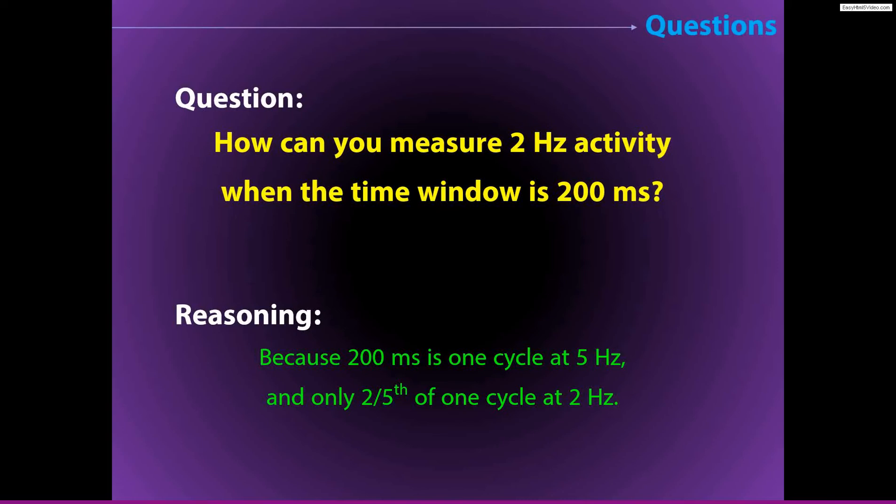And so if you're looking at 2 Hz activity, 200 ms is actually only two-fifths of one cycle. And so if I told you that here is some estimate of activity at 2 Hz, and I only have 200 ms of activity, then yes, you should be very concerned.